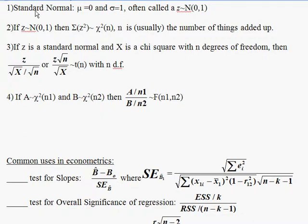If you have a standard normal z, which has a mean of 0 and a standard deviation of 1, and you take that z, square those numbers, and then add them up — if you add up n of them — it's going to be a chi-square distribution with n degrees of freedom.